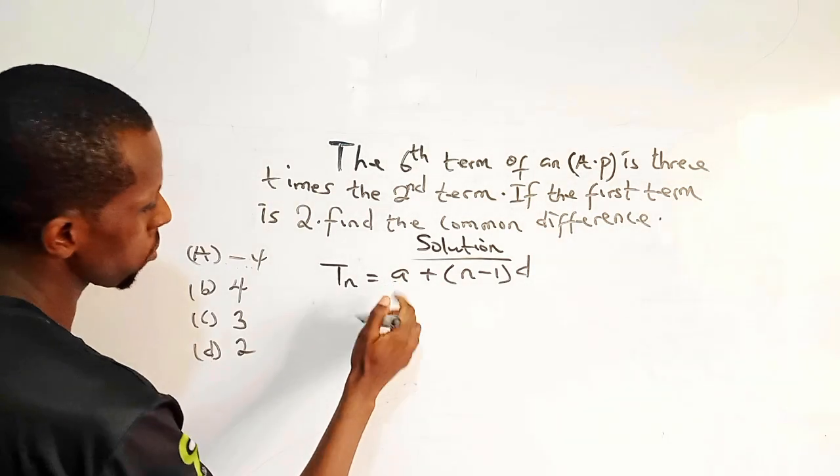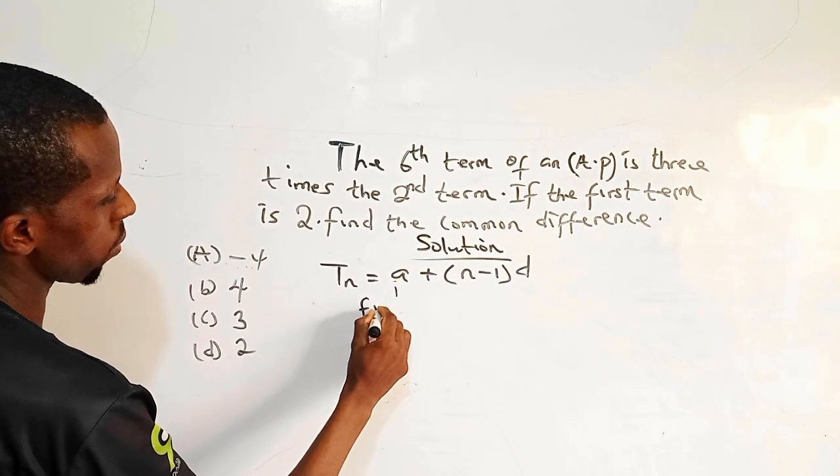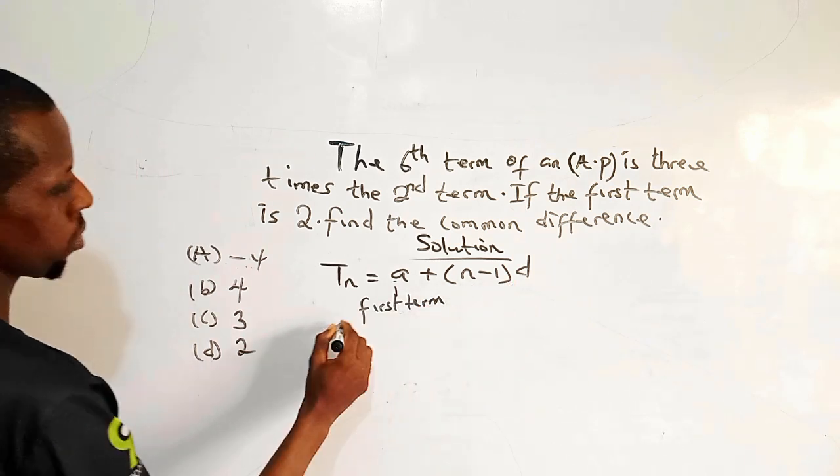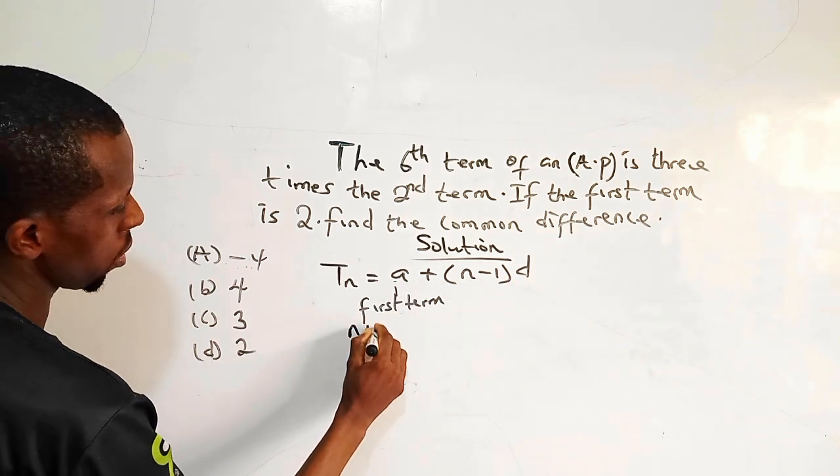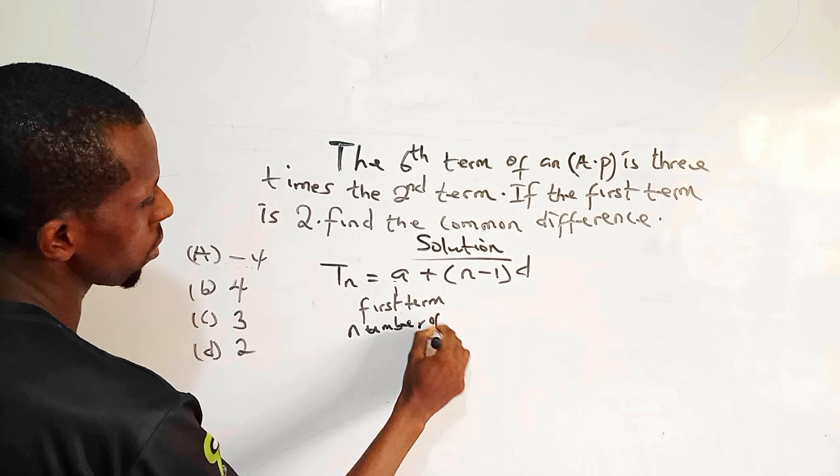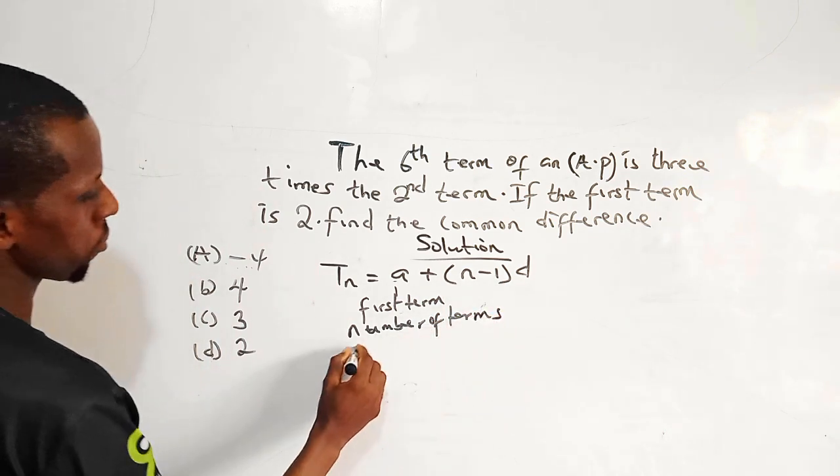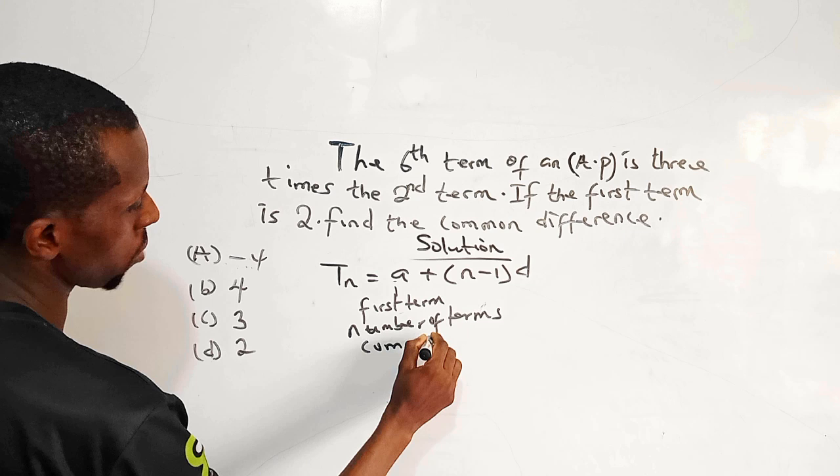We have our a to be first term. n refers to the number of terms. And our d is the common difference.